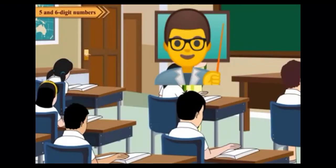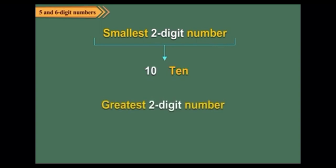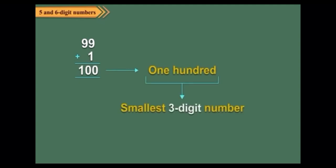Hello children, in the previous class we have learned up to four-digit numbers. Let us see what you know about numbers. The smallest two-digit number is 10 and the greatest two-digit number is 99. We read 99 as ninety-nine. When we add 1 to 99, we get 100, which is the smallest three-digit number. It is read as one hundred.